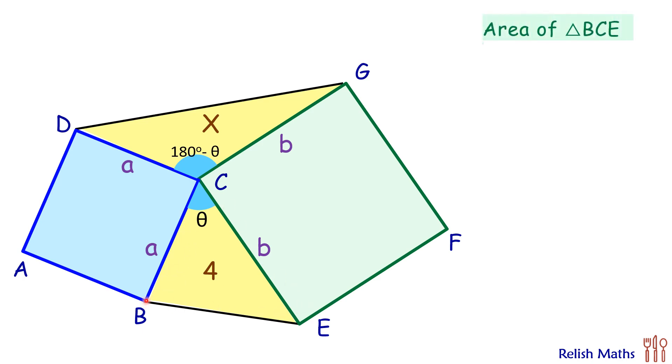of, using the formula, half of a times b times sin θ, and it's given as 4.